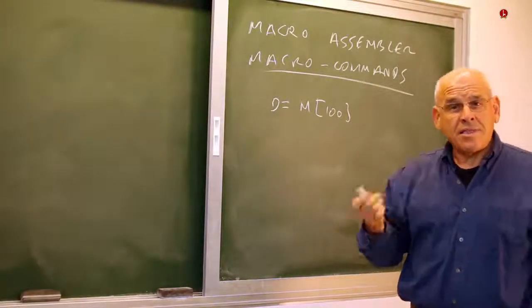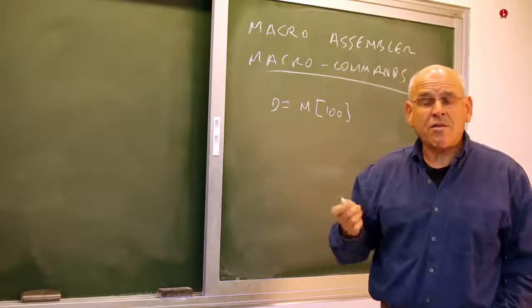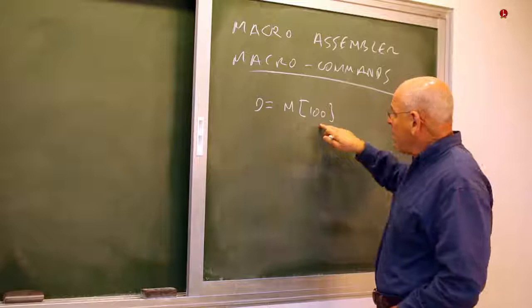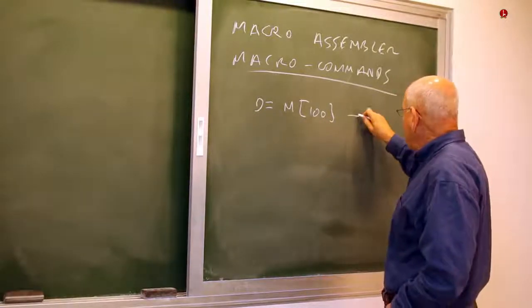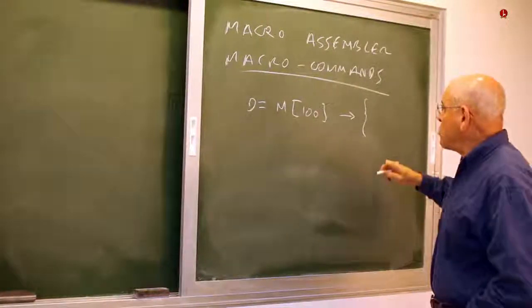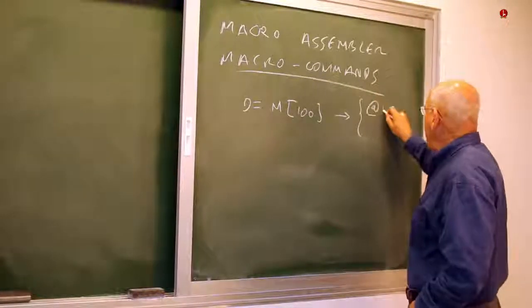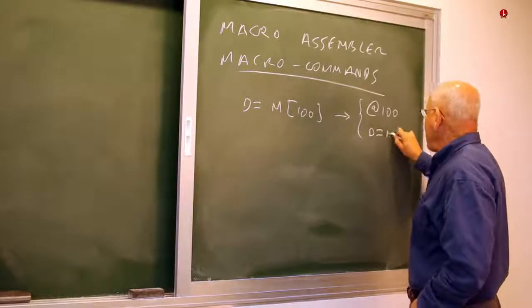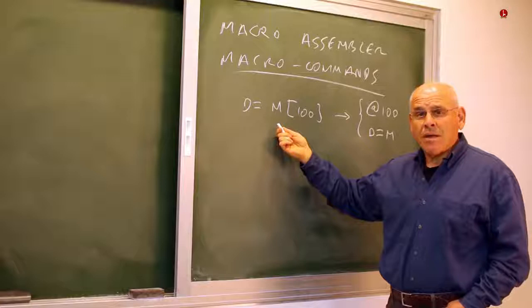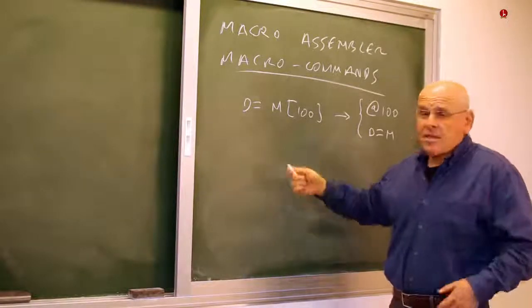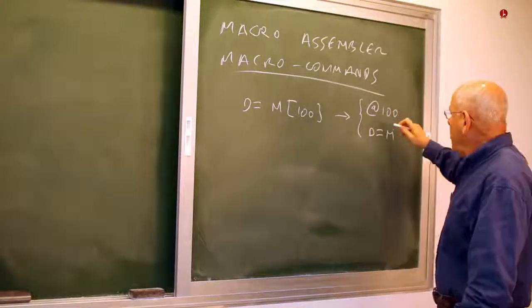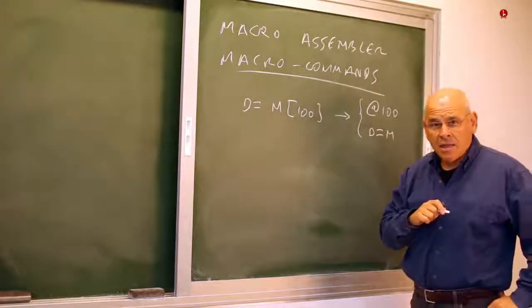The standard Hack language does not feature such a command. So what I can do is take a command like this and translate it into two valid commands in the Hack language: at 100 and D equals M. This is an example of what is sometimes called a macro command — whenever I write this command, I actually mean that I want these two commands to get executed.